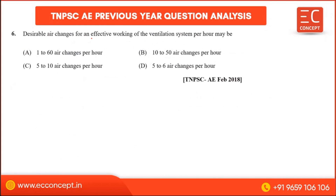Desirable air changes for an effective working of a ventilation system per hour: five to six changes per hour. That is the desirable range. So the answer is five to six air changes per hour.